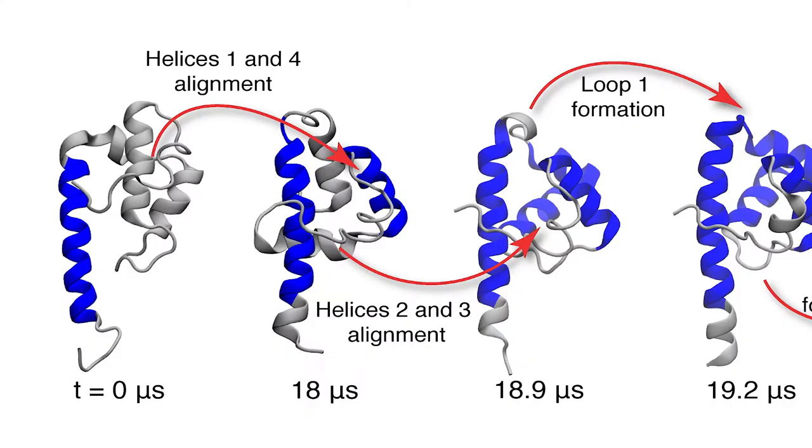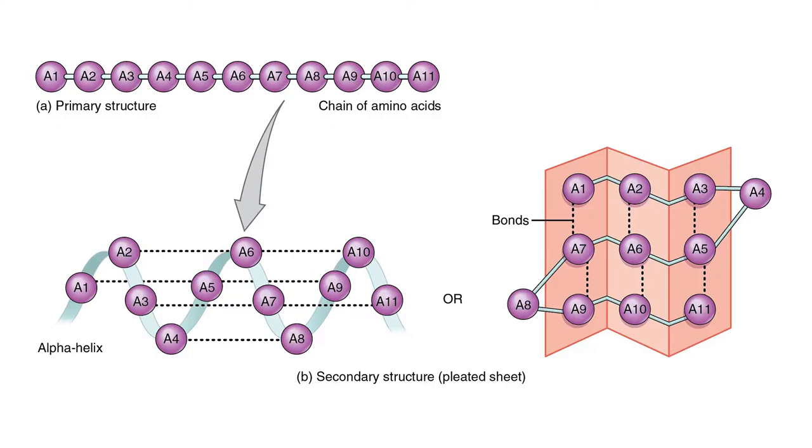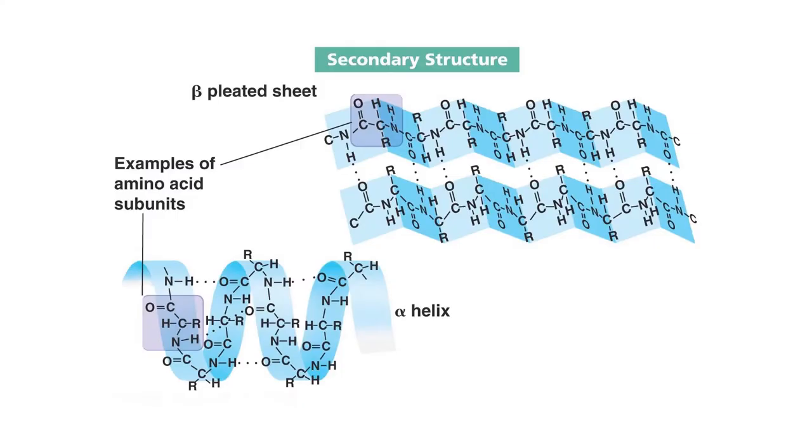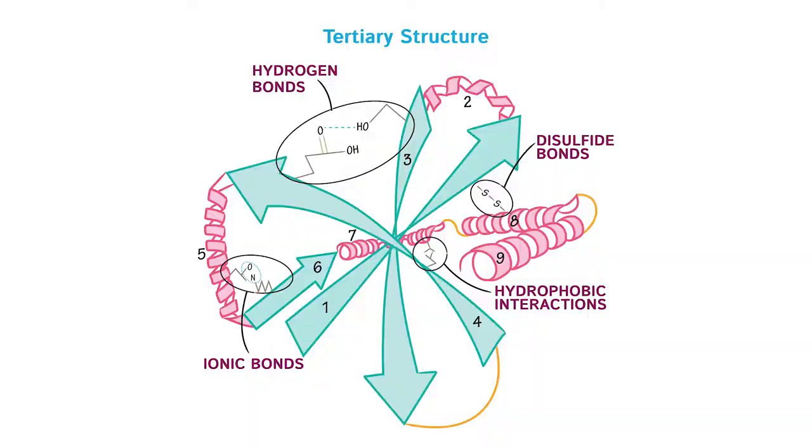Once a protein is made in the ribosome, a combination of local and non-local interactions form the secondary and tertiary structures. The primary motifs of protein secondary structures are alpha helices and beta sheets, which form as a result of hydrogen bond interactions between amide hydrogens and carbonyl oxygens. In addition to alpha helices and beta sheets, turns, loops, and other structures can form due to hydrogen bonds.